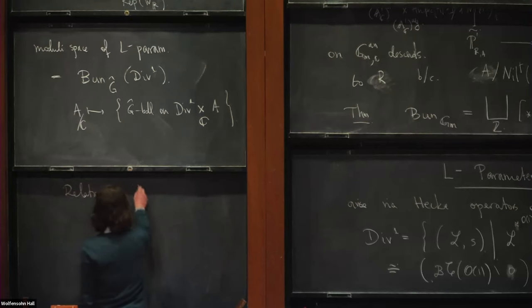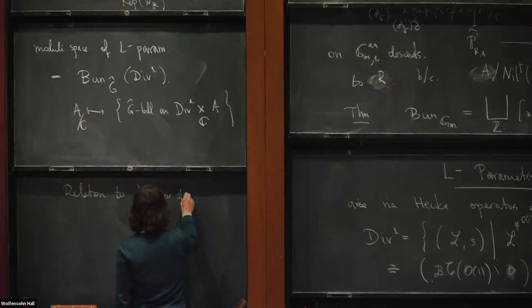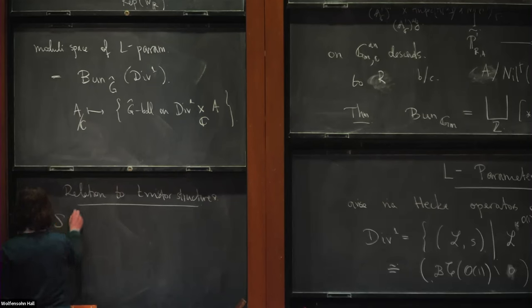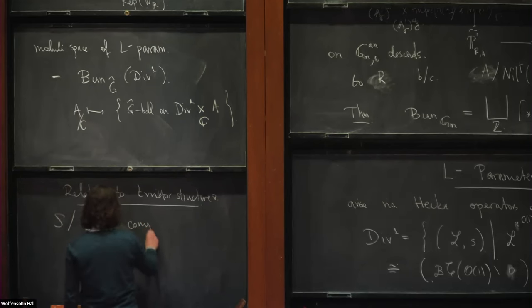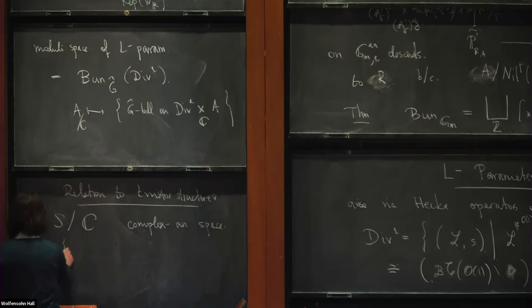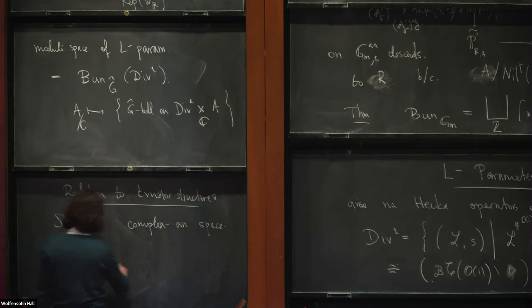Let me now explain more precisely how this is related to twistor structures. Another construction one likes in analytic geometry is the following: if one has some rich analytic variety — a complex analytic space S — there is this thing called S-diamond that one can define, which will live over Div1.